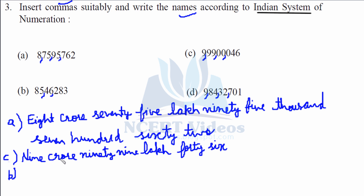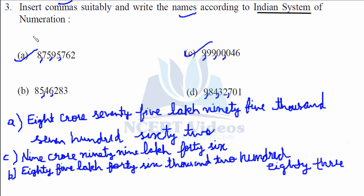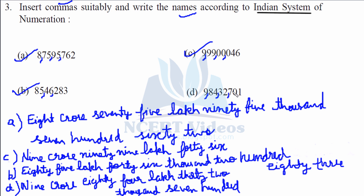Part c: 9 crore 99 lakh 46 — you can write it down from here. Part b gives 85 lakh 46 thousand 283. We are doing the same as we did in part a. The last part d gives 9 crore 84 lakh 32 thousand 701. That completes question number 3 for the Indian system of numeration.